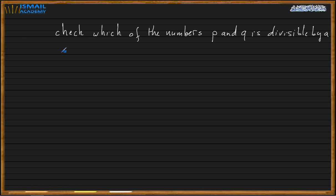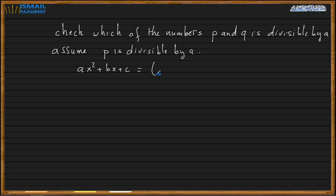When you find which one is divisible by A — let's assume P is divisible by A — then we write ax squared plus bx plus c as x plus P/A times x plus Q, but multiply that second factor's x by A. If Q is divisible by A instead, you do the same idea: divide Q by A and multiply the other x by A. That's the main concept.